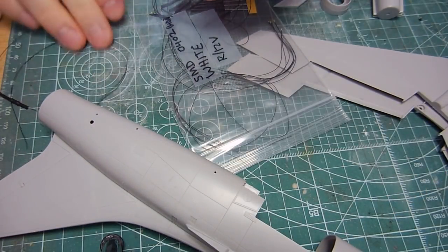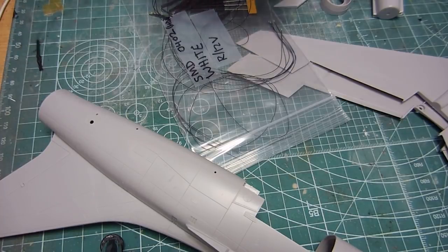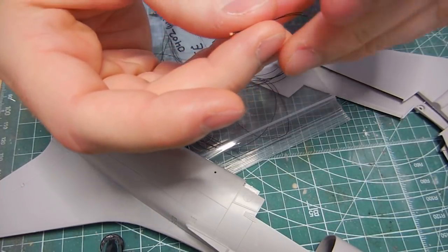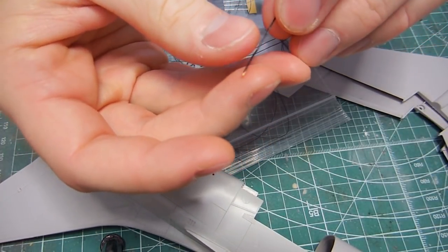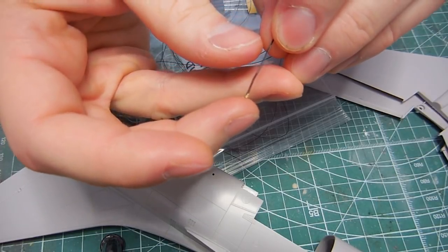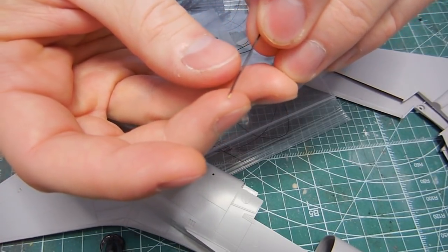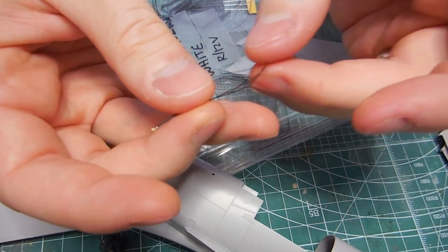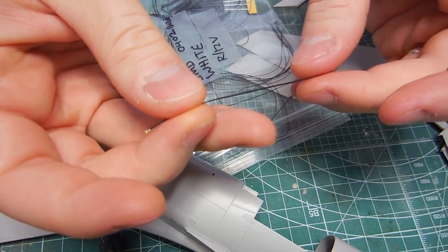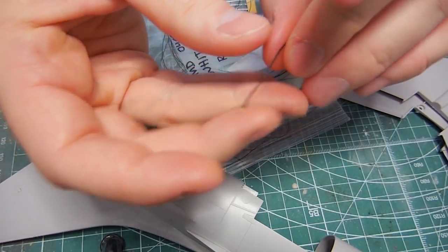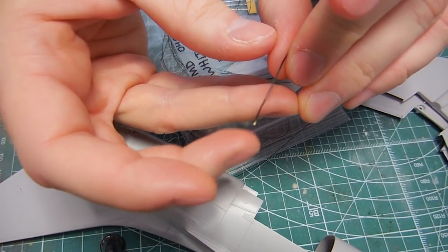These are 0402 SMDs. I got these off of HDA Model Works. These are super, super tiny little lights as you can see. And it has this nice really super thin wires here. Now these are white. What I need to do is buy some red and blue.